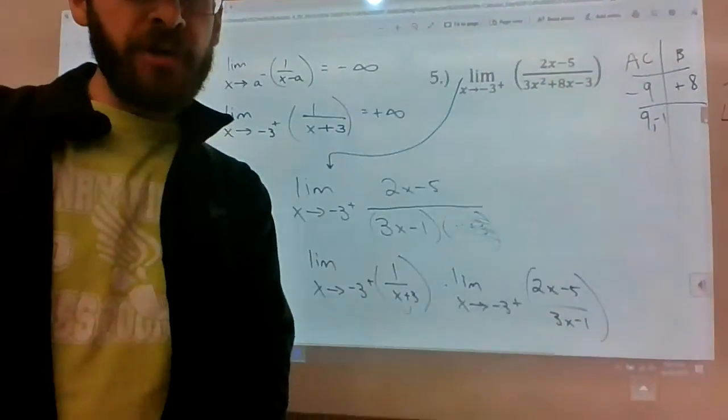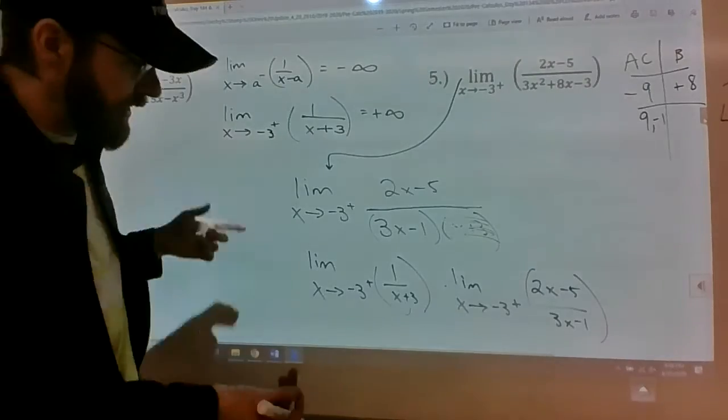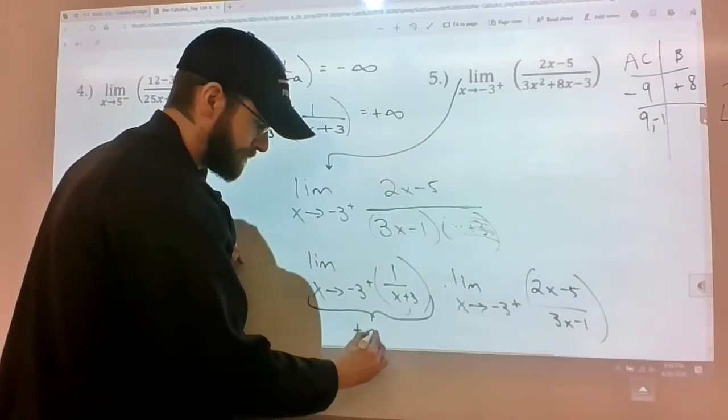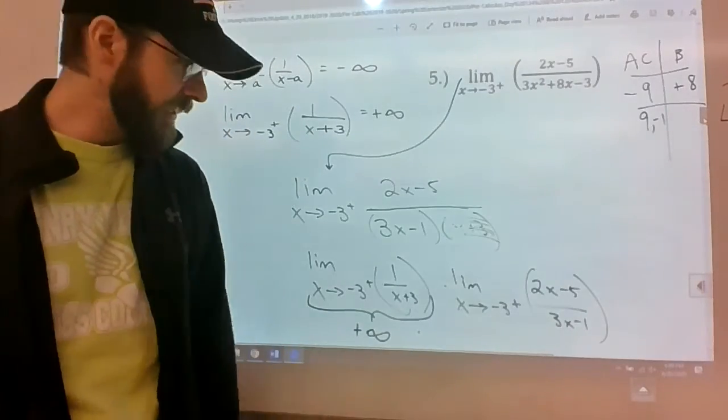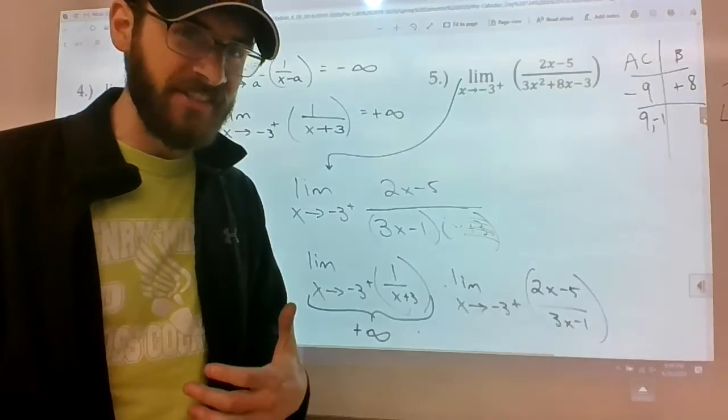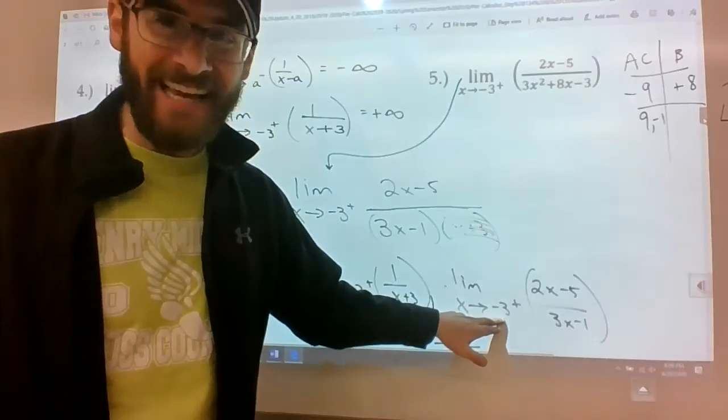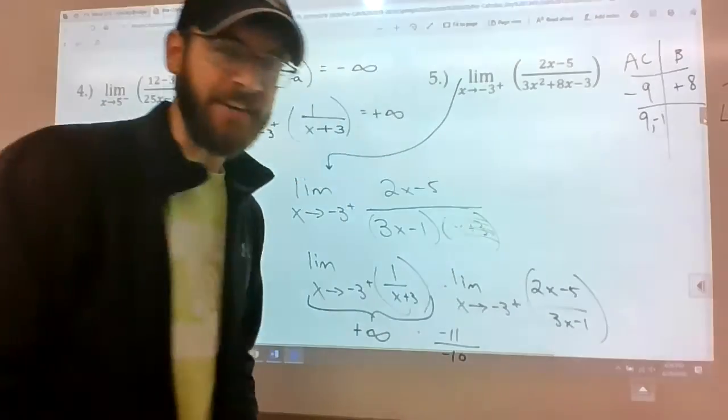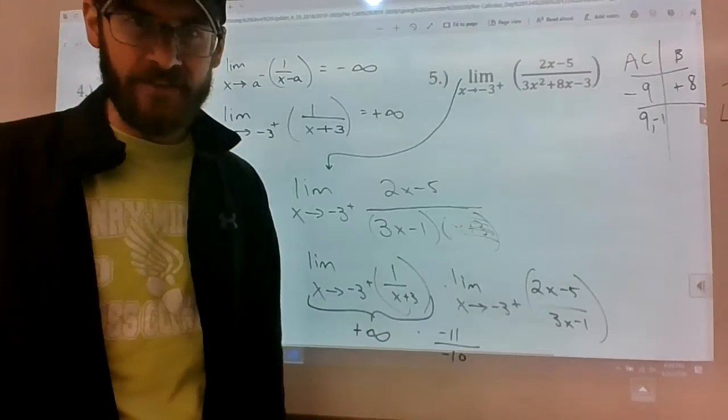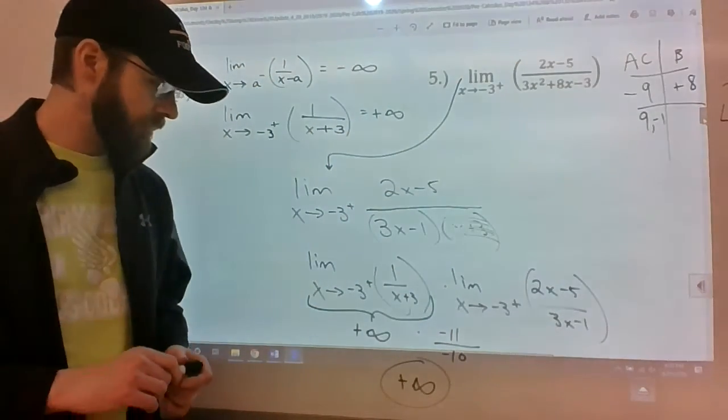Hopefully you guys followed my logic when I literally replaced the a with a negative three. It's showing you now that this equals positive infinity, and that it's being multiplied by a constant value. It's being multiplied by 2(-3) - 5. Two times negative three is negative six minus five is negative eleven. The denominator is going to be 3(-3), which is negative nine, minus one is negative ten. A negative divided by a negative is a positive value. What's infinity times 11/10? It's still positive infinity.